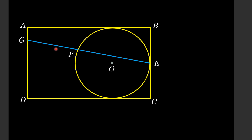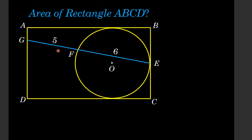In such a manner that the length EF is 6 units and the length FG is 5 units. With all this given information, we have to find the area of rectangle A, B, C, D.